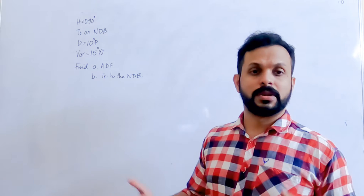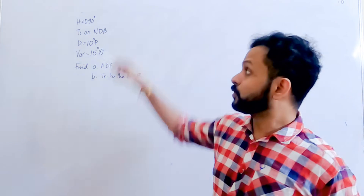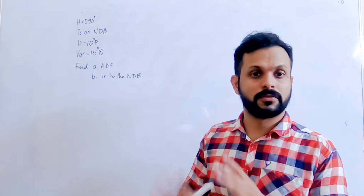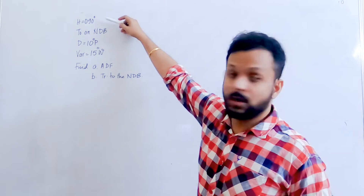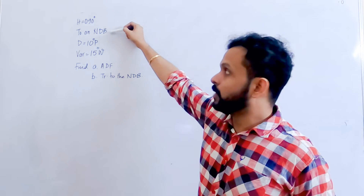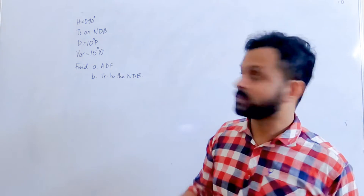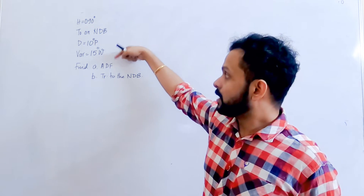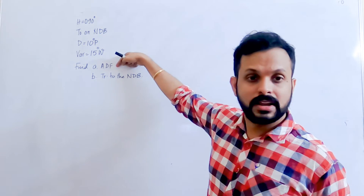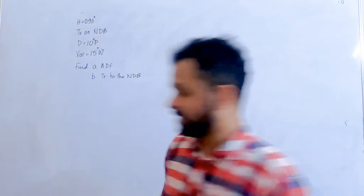Compare this to the previous questions. In all previous questions you have the heading, whether it is tracking to or away from the NDB, and a drift or nil wind condition given. You are asked to find out ADF and track to the NDB — more like a QDM. The only thing standing out here is variation.